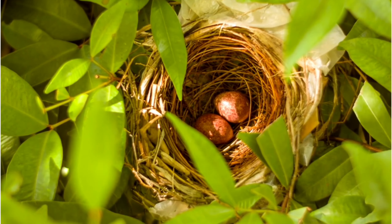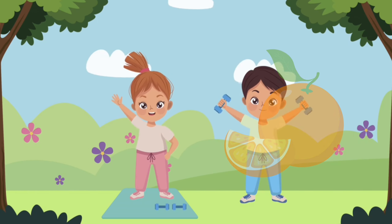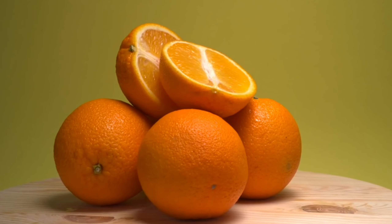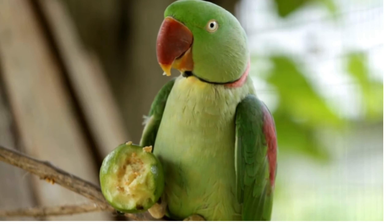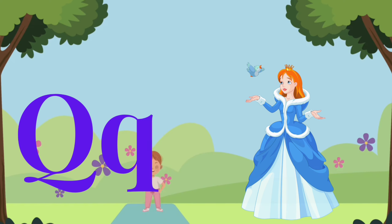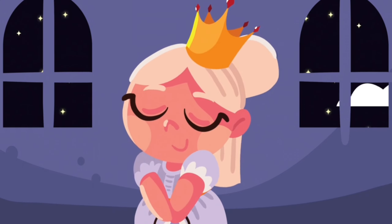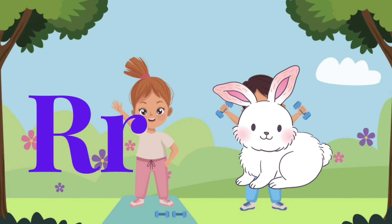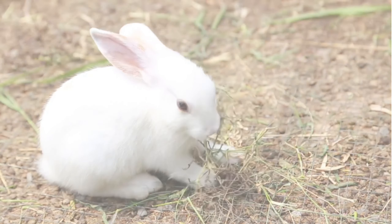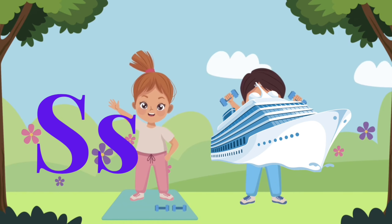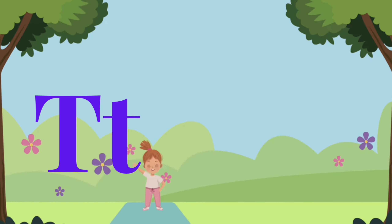N for nest. O for orange. P for parrot. Q for queen. S for sheep. T for tiger.